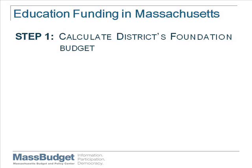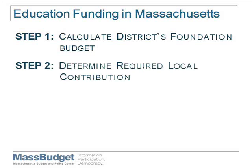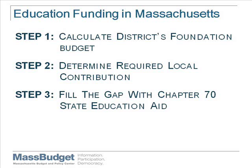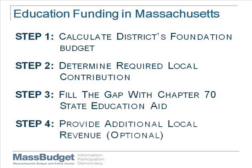First, you calculate a district's foundation budget for providing an adequate education for all children. This amount varies district to district. Second, you calculate the required local contribution towards this foundation amount. Third, you fill the gap between Steps 1 and 2 with Chapter 70 State Education Aid. And finally, Step 4, when Steps 1 through 3 have been done, local districts have the option of providing additional revenue on top of the required minimum contribution.